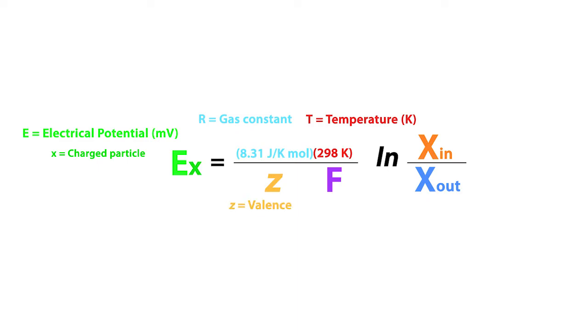Z represents the valence of the charged particle. For example, sodium and potassium ions carry a valence of plus one, chloride and bicarbonate ions, a valence of minus one, and calcium ions, a valence of plus two.